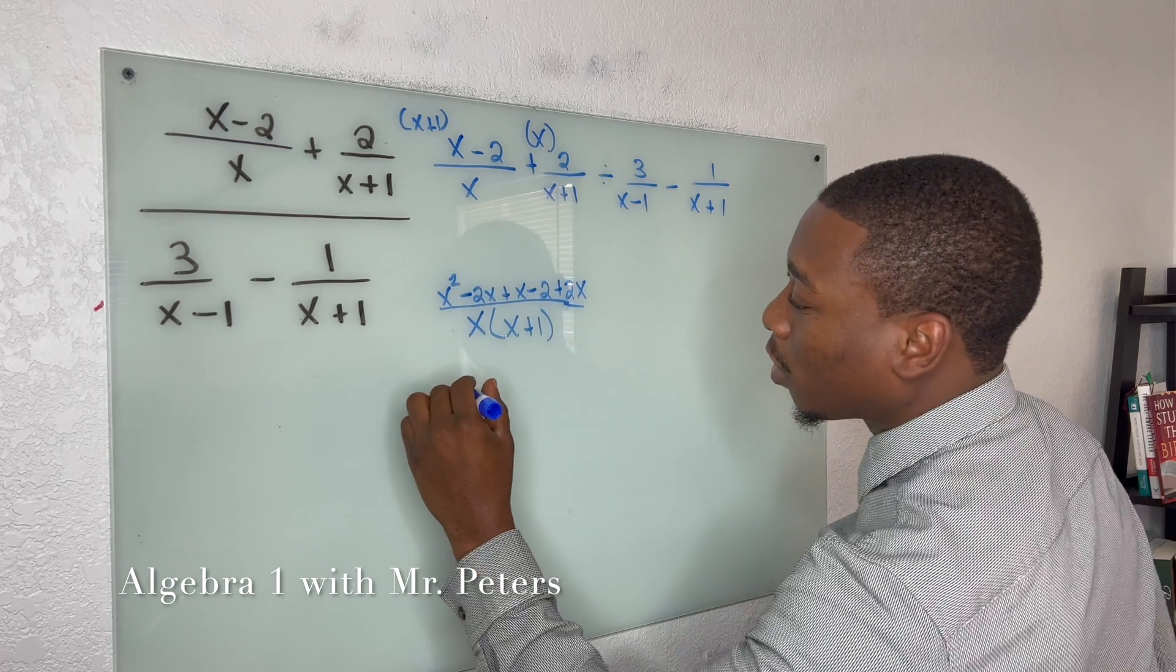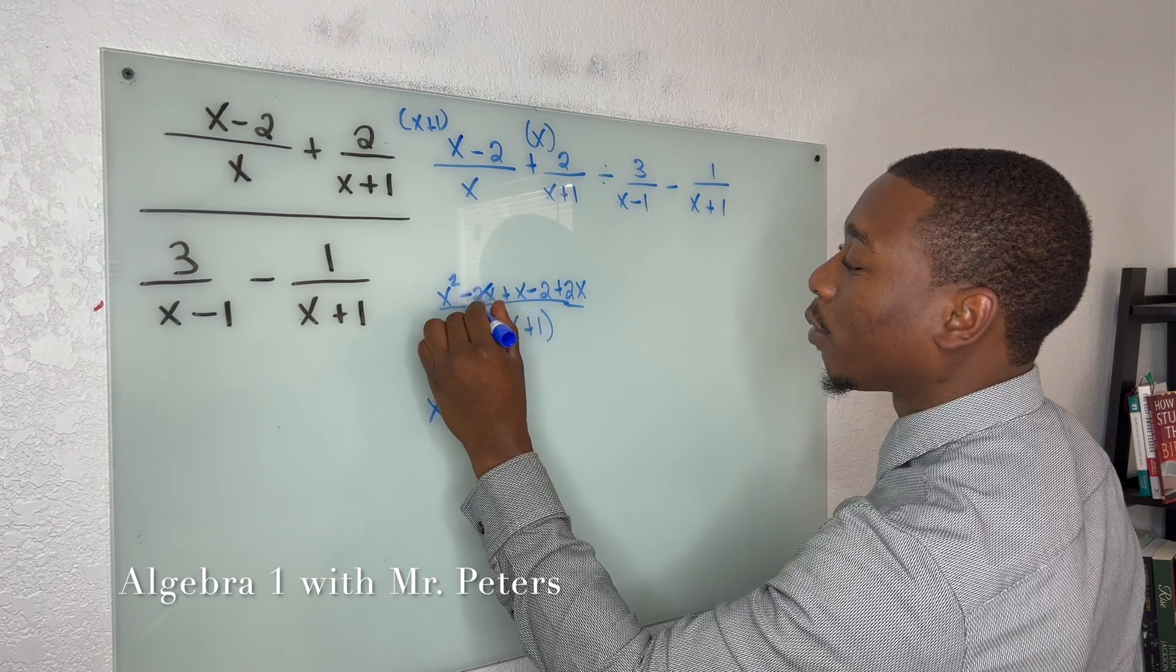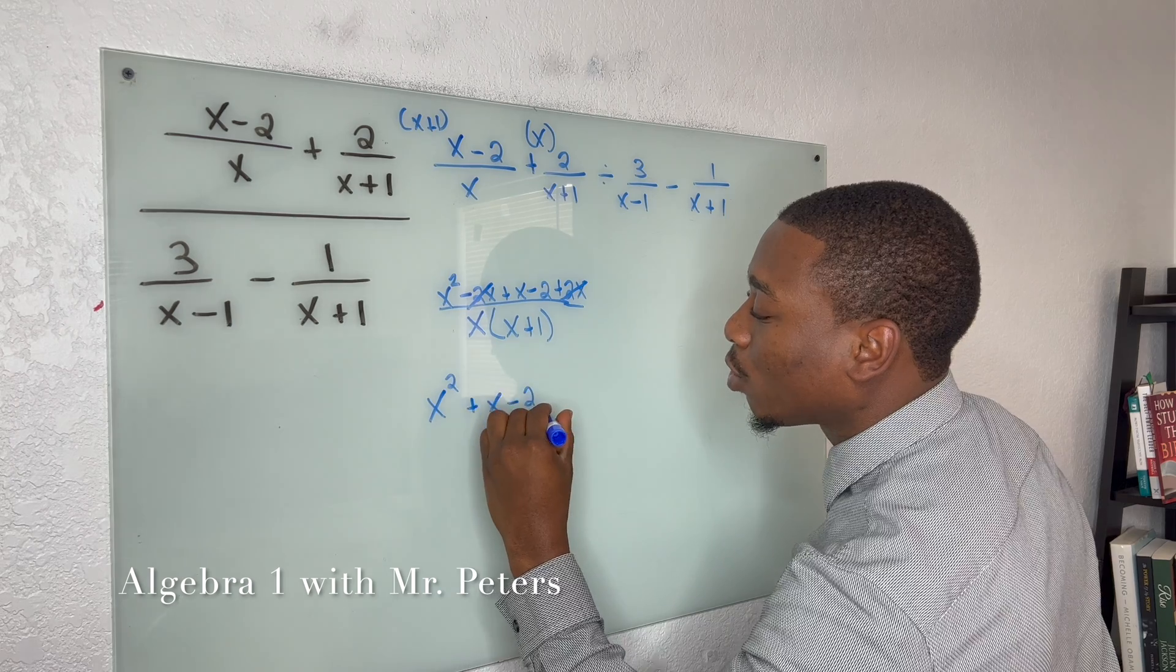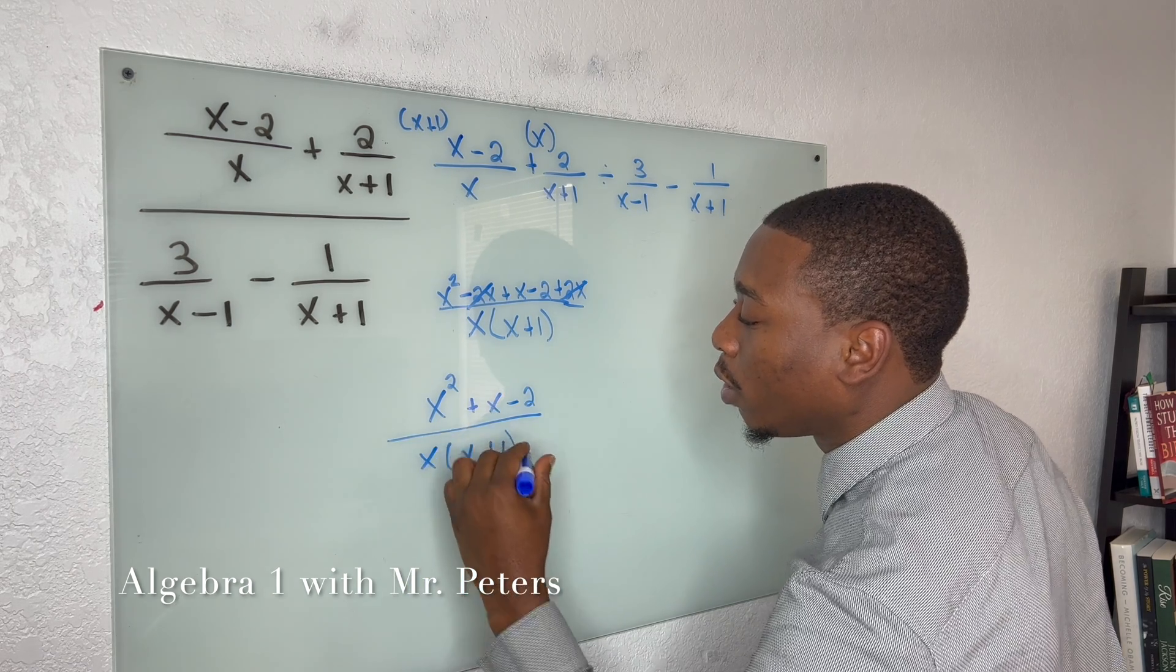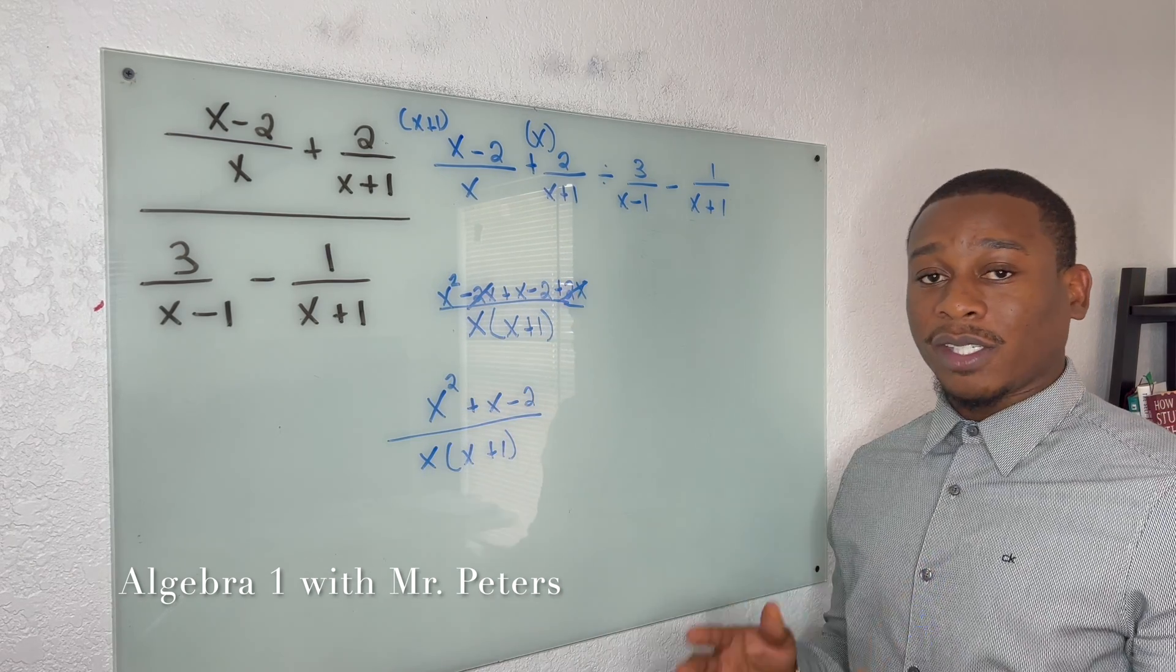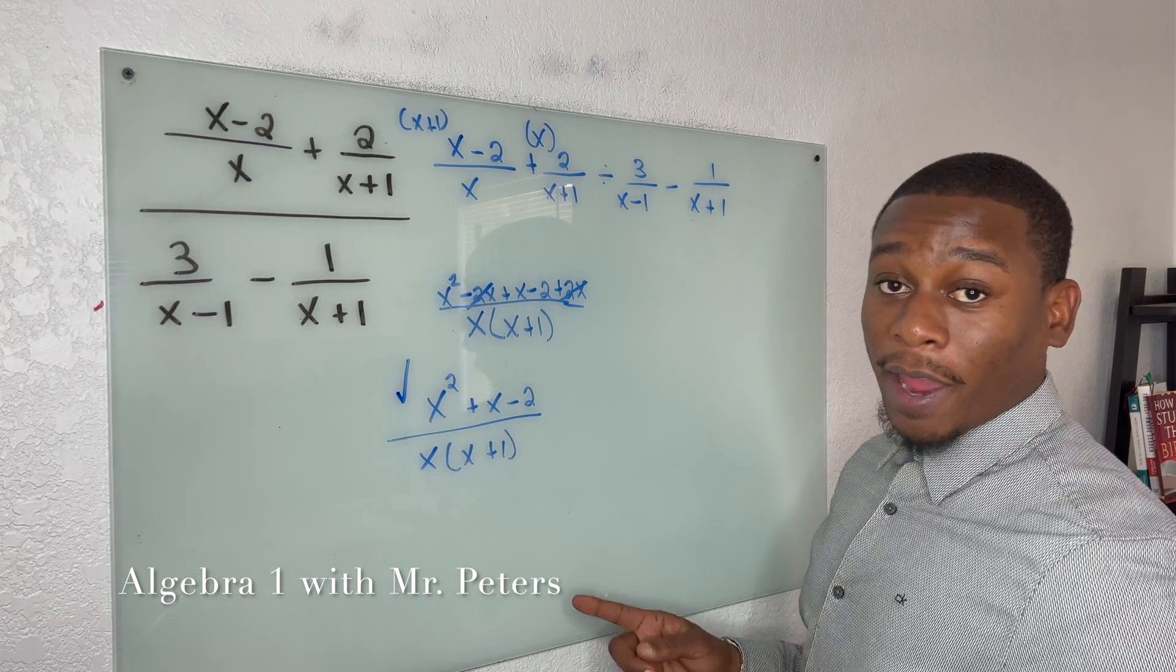Now we're going to clean this up and what we get is x squared plus x minus 2, and this is all over x times x plus 1. Now it's very important that at every step you check to see if we could factor. When we look right here, we could definitely factor that.